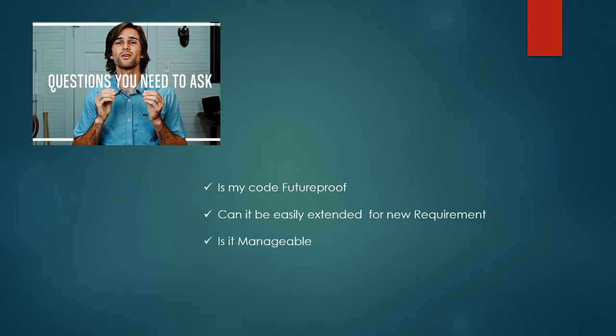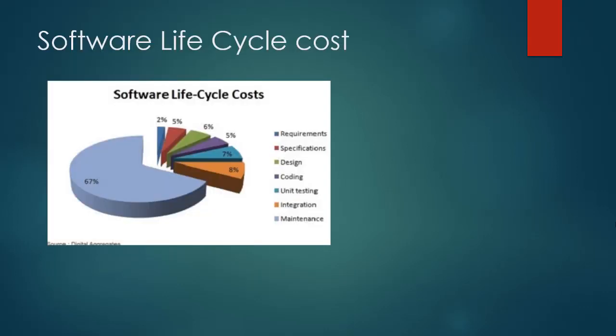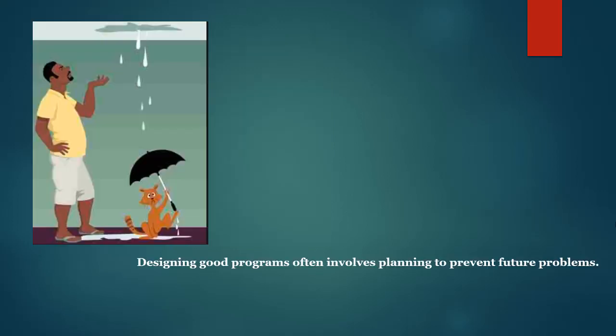Is my code manageable? And why are these questions important? If we look at the software life cycle cost, software maintenance constitutes 67% of that cost. The maintenance cost of a software includes fixing bugs, updating or managing new requirements, and the overall maintenance of the software.